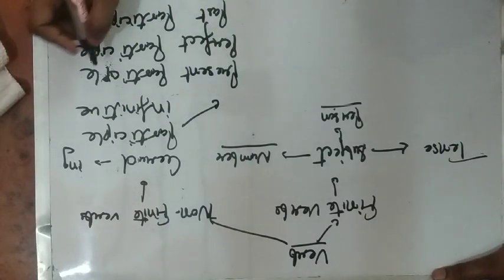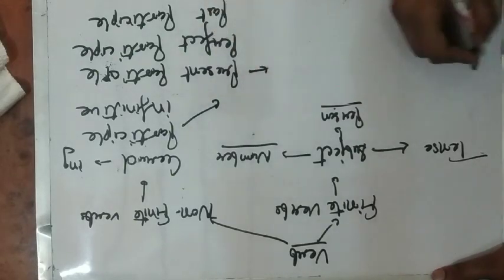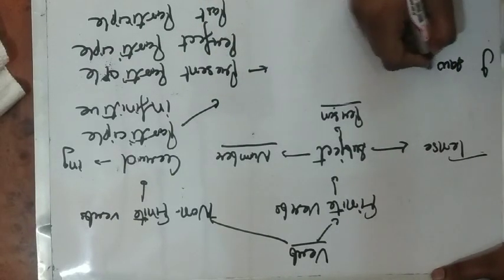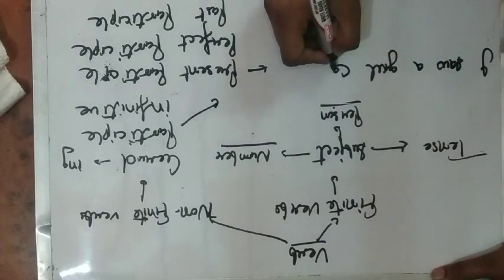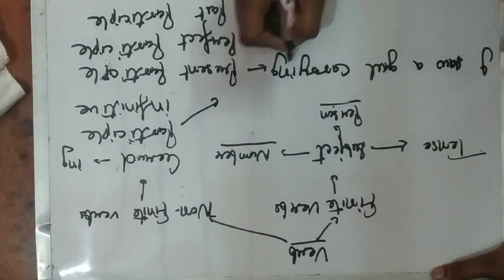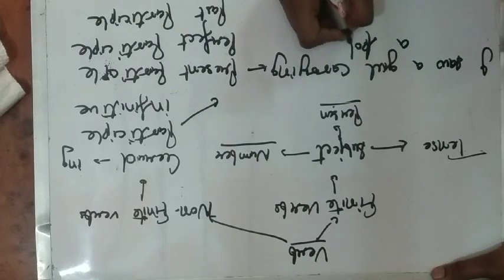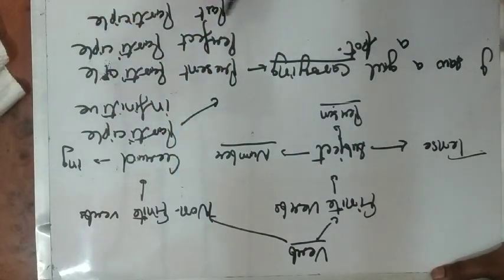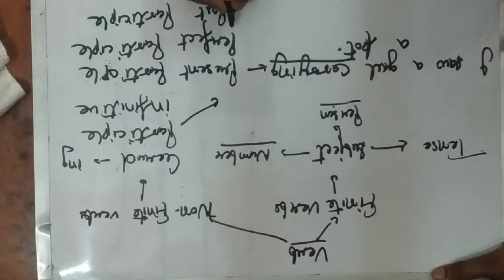So, present participle. Here is an example: I saw a girl carrying a pot. Here 'carrying' is a non-finite word and it performs as a present participle.